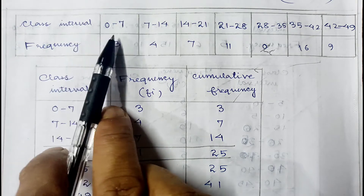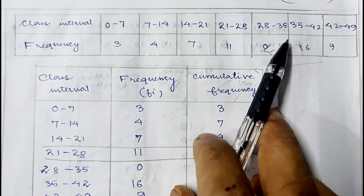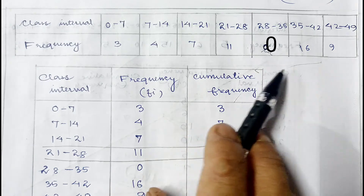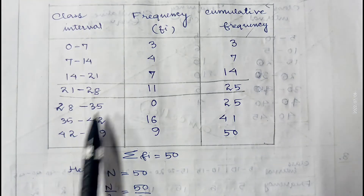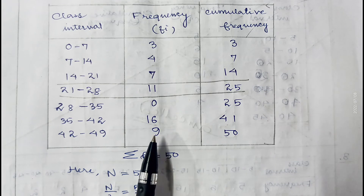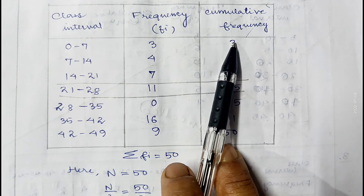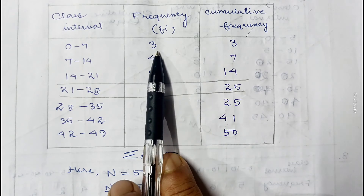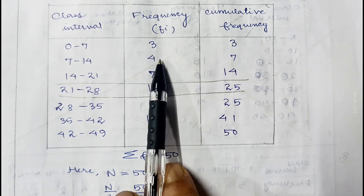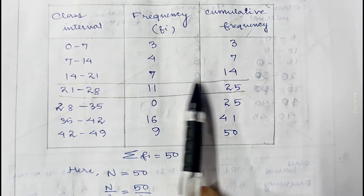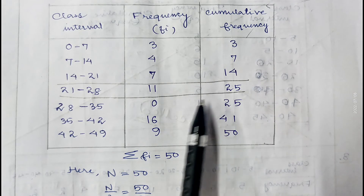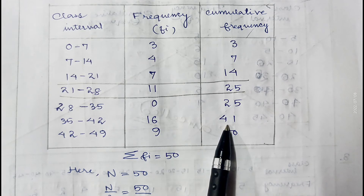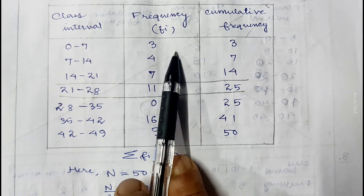In question number 2 of exercise 14C, the class intervals are 0 to 7, 7 to 14, up to 49, and the corresponding frequencies are 3, 4, 7, 11, 0, 16, and 9. In the first step we calculate the cumulative frequency: 3, then 3+4=7, 7+7=14, 14+11=25, 25+0=25, 25+16=41, and 41+9=50.